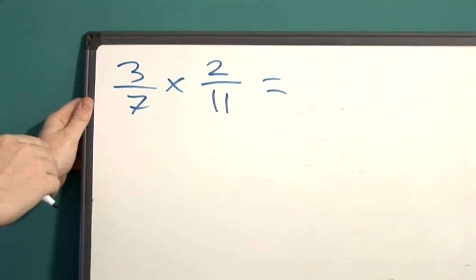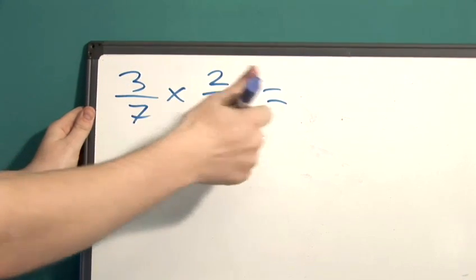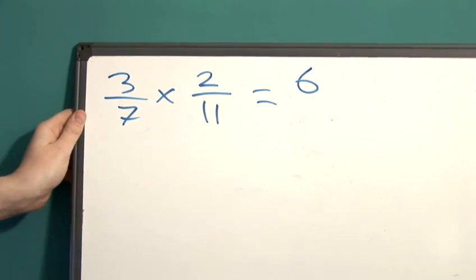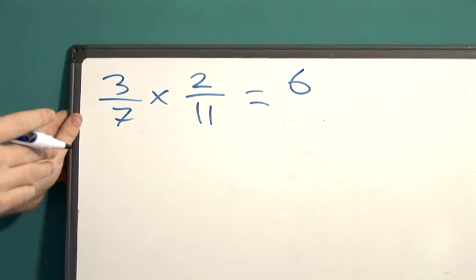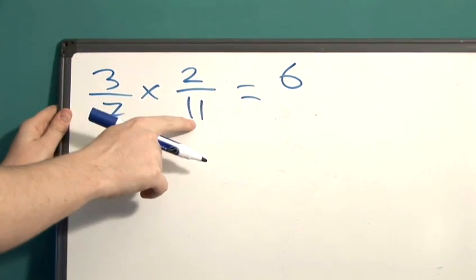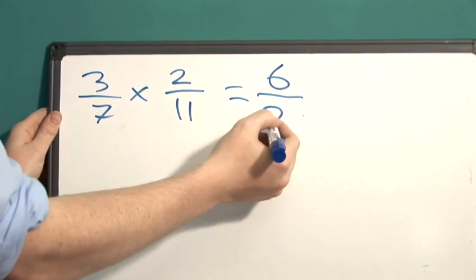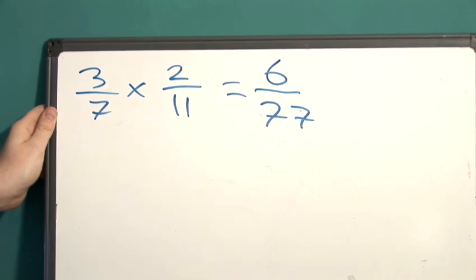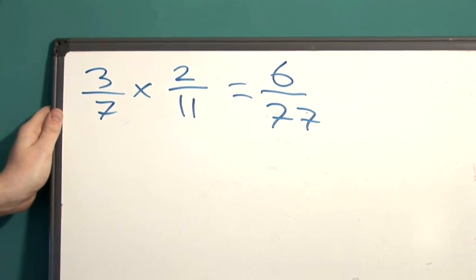Let's start with the numerator. Three multiplied by two is six and that is our new numerator. Seven multiplied by eleven is seventy-seven and this is our new denominator. It really is as simple as that.